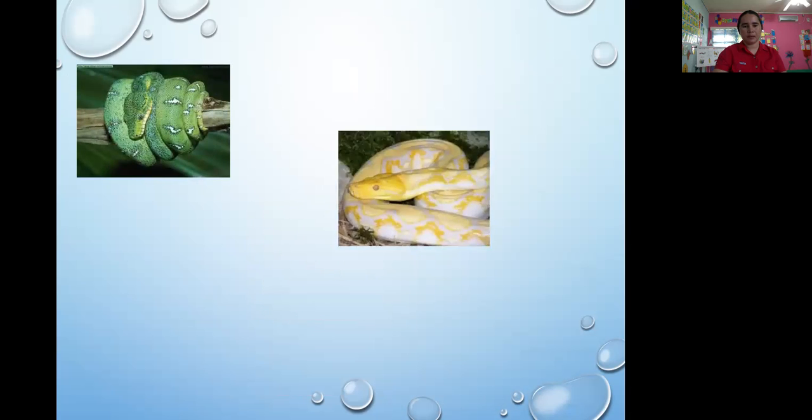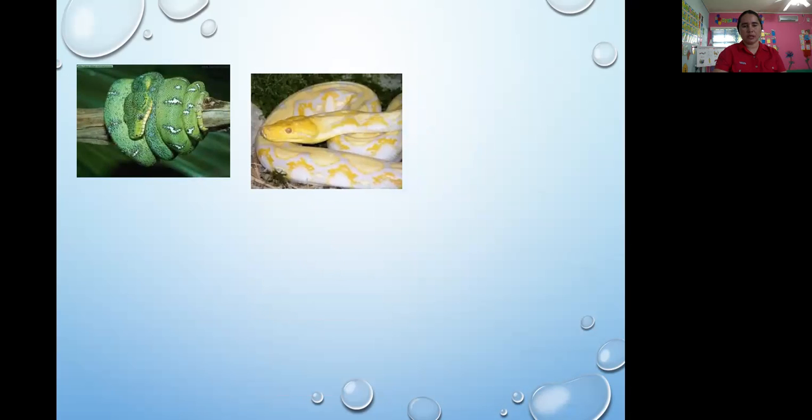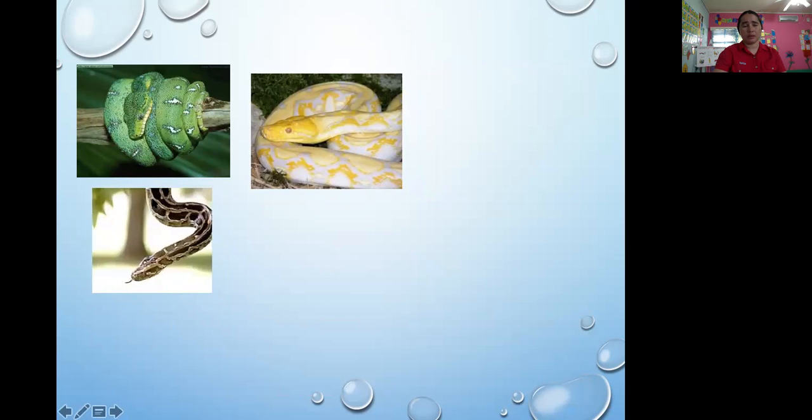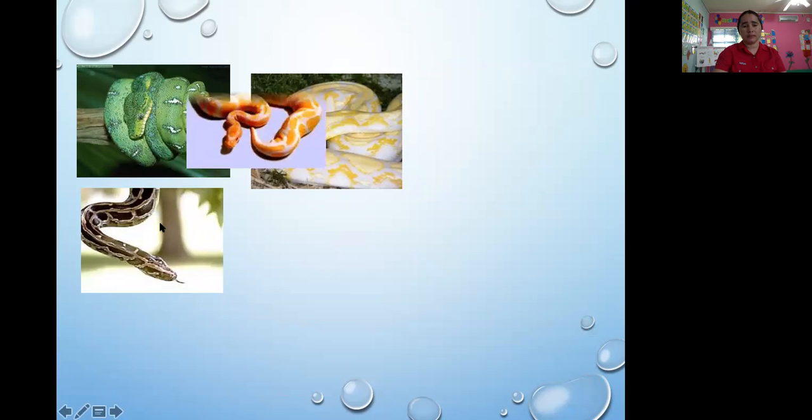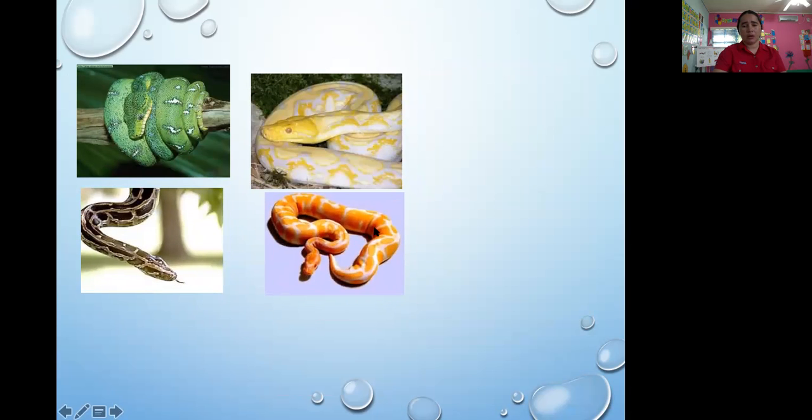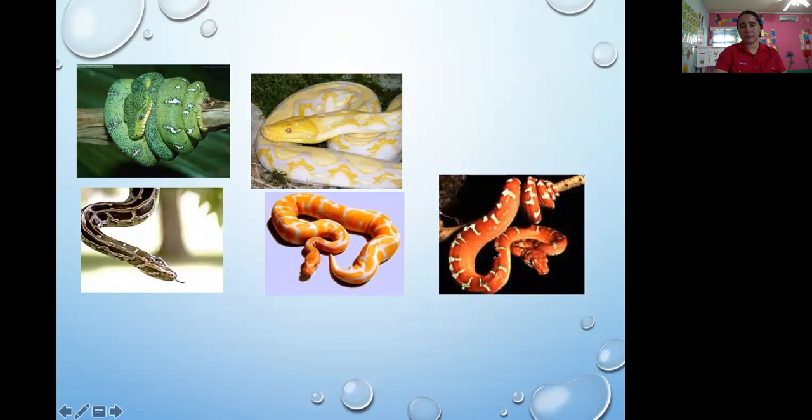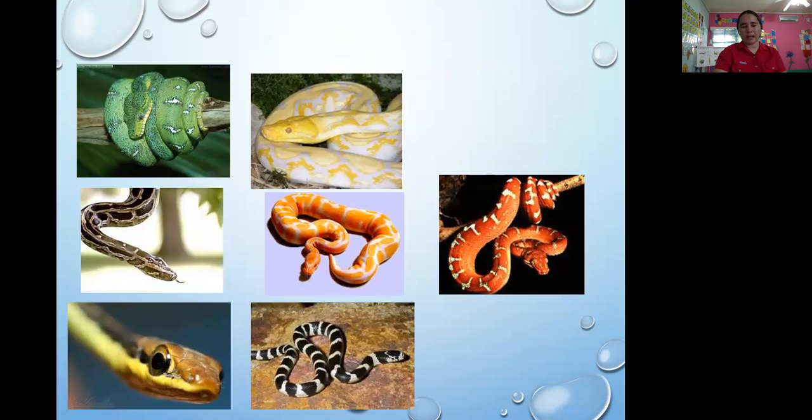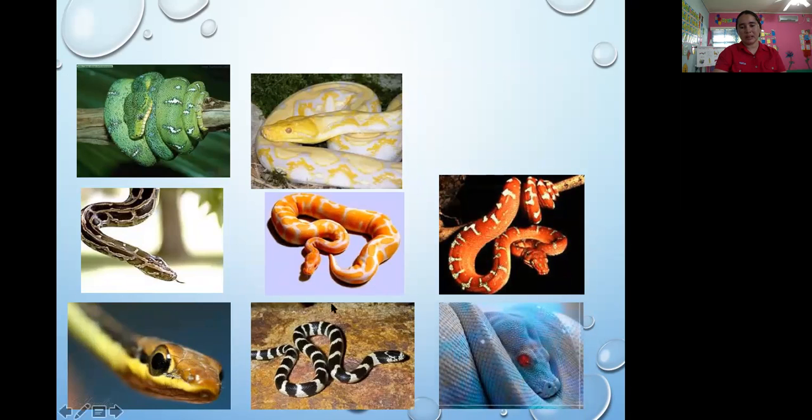We got snakes. You can see the green snake with white spots. Yellow snake with white spots. And we got brown and black snake. Orange and white snake. Red and white snake. Wow, this one like greenish, black and brown and yellow. And this one like black and white. This one is blue and gray. Look at the eyes. The eyes are red. Beautiful.